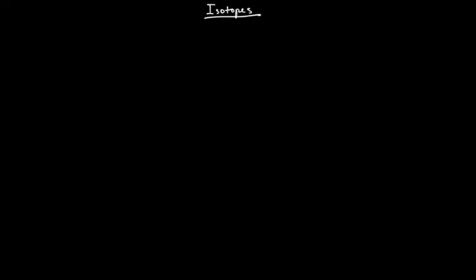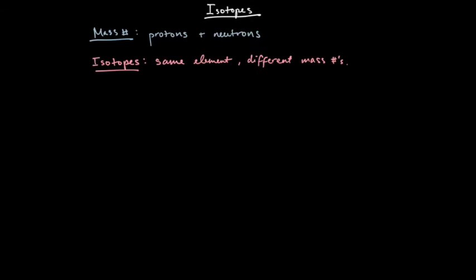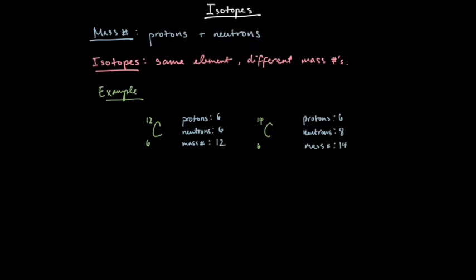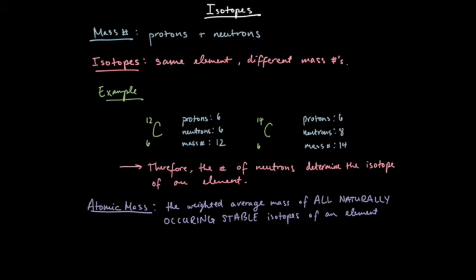The next thing we're going to talk about are isotopes. Let's start with the idea of the mass number. The mass number is simply the sum of the protons and the neutrons together. Isotopes simply are those of the same atoms of the same element, but they differ in their mass numbers.